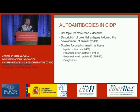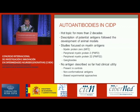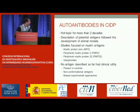The topic of autoantibodies in CIDP has been a hot topic for more than two decades, almost three. But the description of potential candidate antigens followed the development of animal models. Considering the demyelinating nature of the disease, most studied antigens were myelin antigens, in particular myelin protein 0, 2, 22, and gangliosides. None of these antigens had any clinical utility because they were present in a significant proportion of controls too, because they were discovered with techniques that didn't account for conformational epitopes, and also because the experimental approaches were biased toward candidate antigen selection.